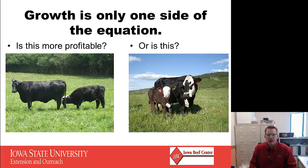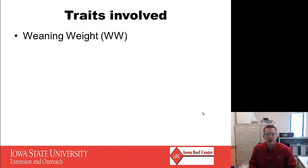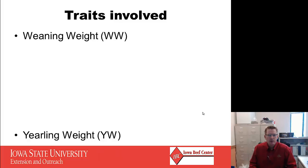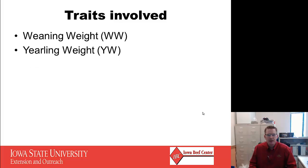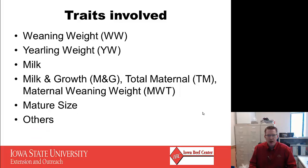It's important to keep in mind that the growth traits we measure are largely on the output side, with very little on the input side. The traits involved are weaning weight — the first and foremost, and one most people are familiar with — yearling weight, milk, milk and growth (also known as total maternal or maternal weaning weight), mature size, and some others used to assess performance.